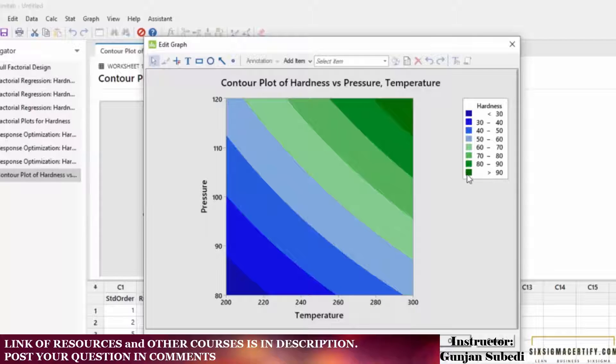For example, deep green color gives you that hardness is greater than 90. You can see that on different color species over here. It shows that if I set the temperature at around 294 units and pressure at around 117 units, I get the mean hardness as 94 units.